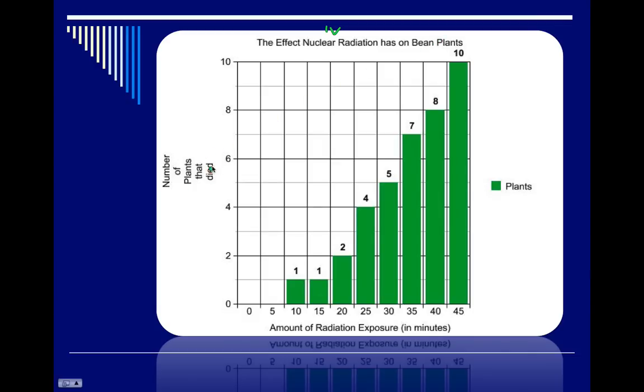Well if you look over here on the Y, it's number of plants that died. So the effect on the bean plants is your dependent variable. And unfortunately for the plants, it winds up in their death.